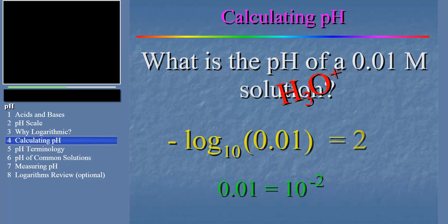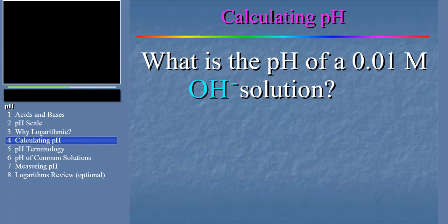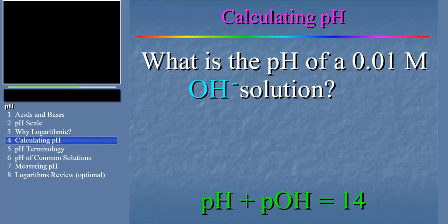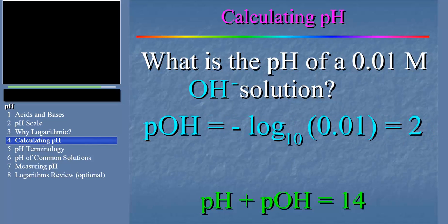Let's try another example and learn a handy rule about pH. Specifically, the pH plus the pOH of a solution is always 14. This little equation results from equilibrium considerations covered in a different module. For this problem, we take the minus log of 0.01 and get 2 — but that's the pOH, and we were asked for the pH. Since pH plus pOH equals 14, the pH must be 12.